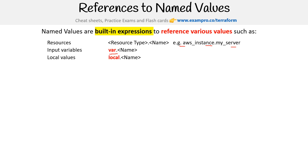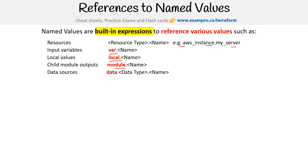Then we have local values, and again that's singular — so 'local.' For child modules, it starts with 'module.' — singular. For data sources, it's going to be 'data' — singular. Just remember singular, because they can have a trick on the exam questions where it'll be like 'data' or 'datas.'